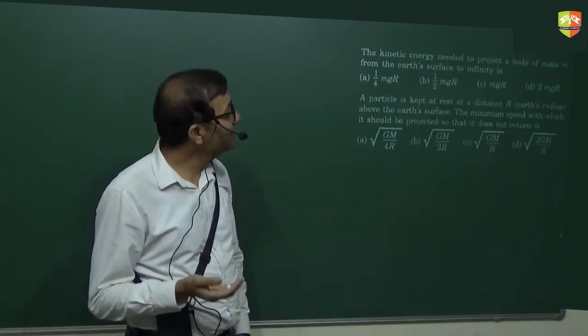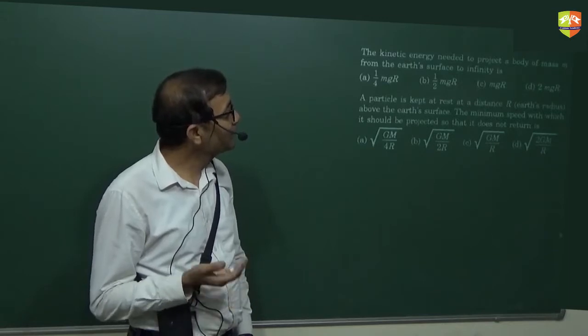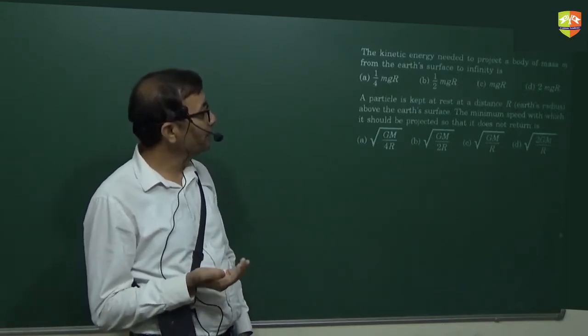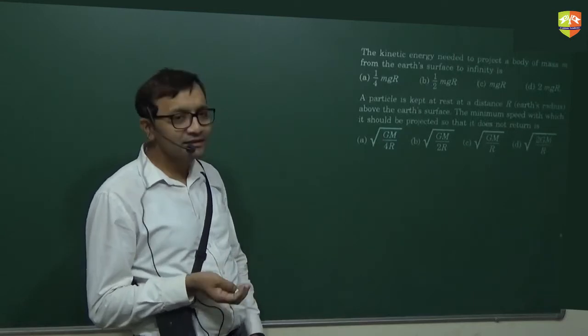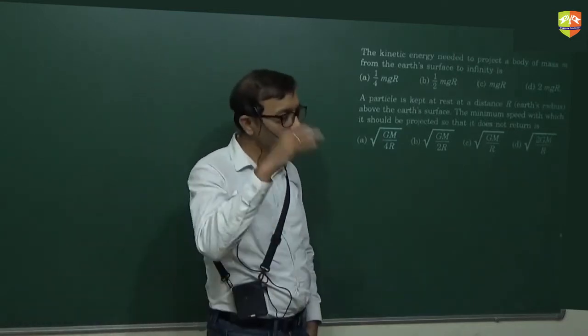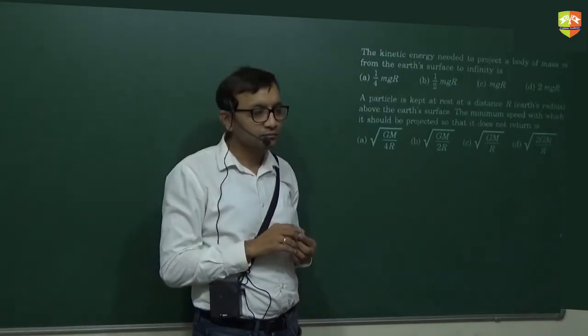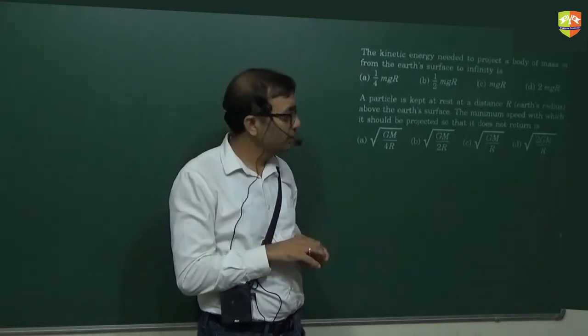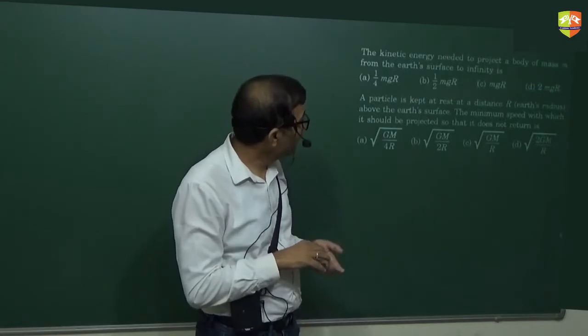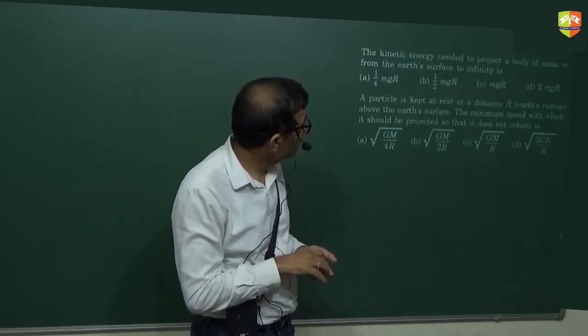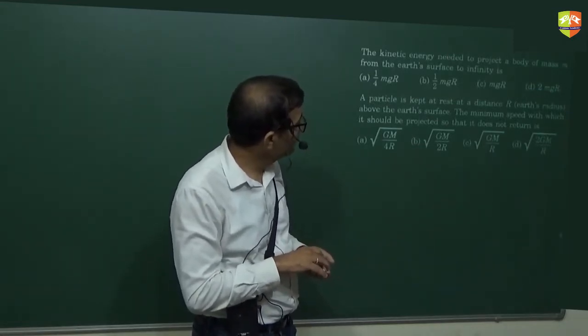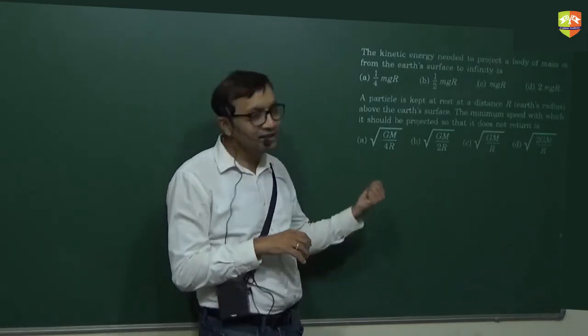Kinetic energy needed to project a body of mass M from the Earth's surface to infinity. It is just escape velocity, root 2g Re. So half M into 2g Re gives Mg Re. Then this one particle at rest at height R above the Earth's surface, minimum speed. It is C. It is again the escape velocity only.